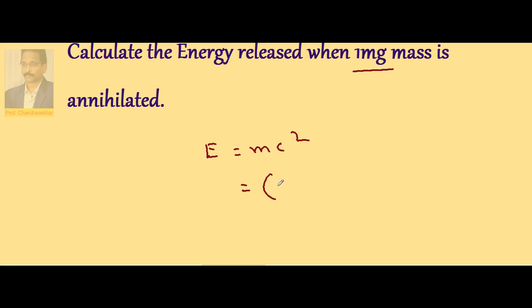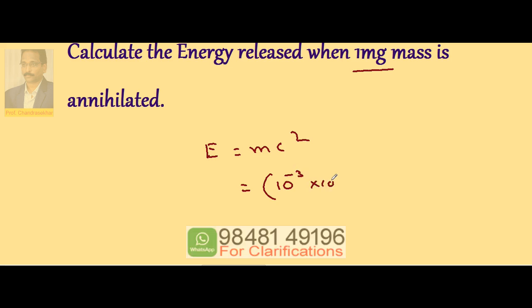Here, m is milligram converted into kilograms. Milli is 10 to the power of minus 3, gram is 10 to the power of minus 3 kg. So, 1mg is 10 to the power of minus 6 kg, into velocity of light.